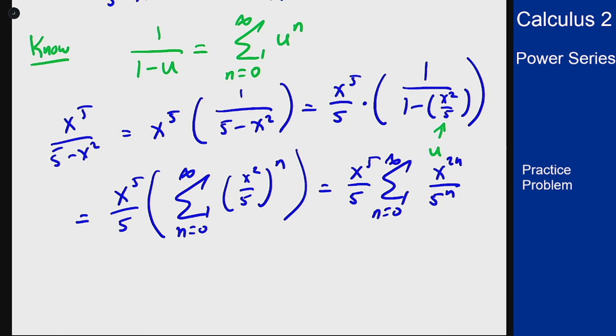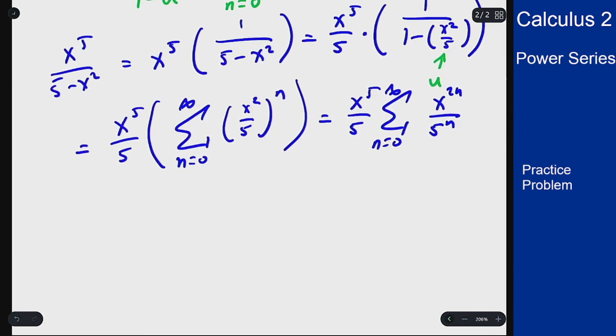That would work for an answer. I can also put this term back inside the sum to get a final answer: the sum from n=0 to infinity of x^(2n+5) / 5^(n+1).